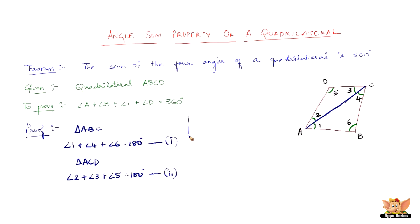Now adding 1 and 2, angle 1 plus angle 4 plus angle 6 plus angle 2 plus angle 3 plus angle 5 equals 360 degrees.